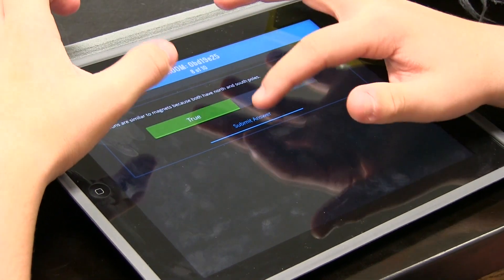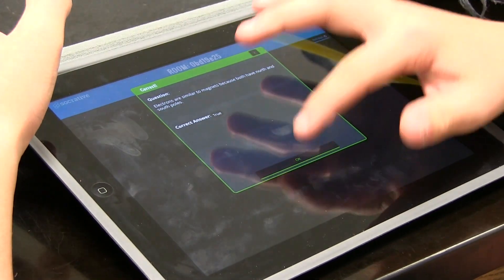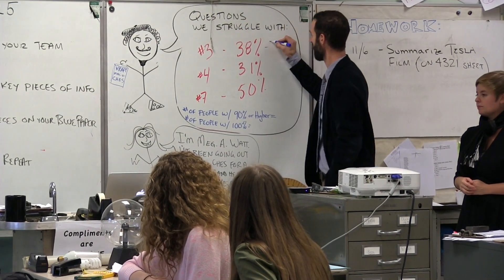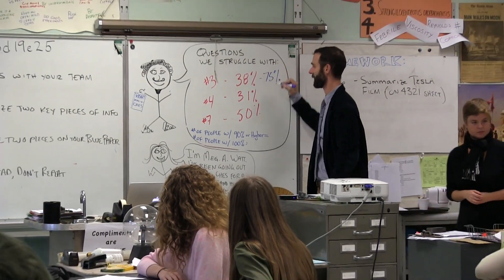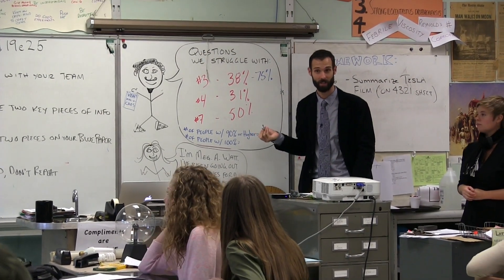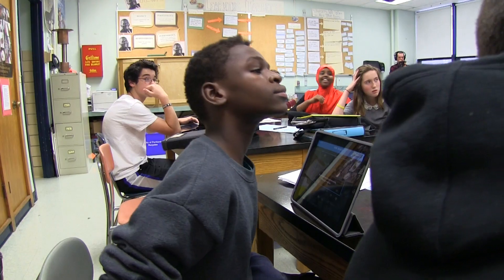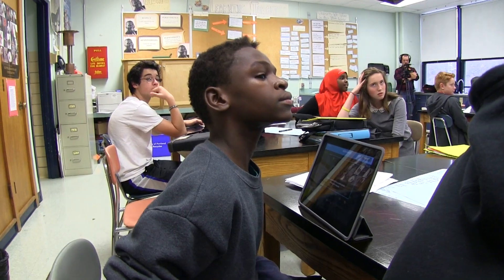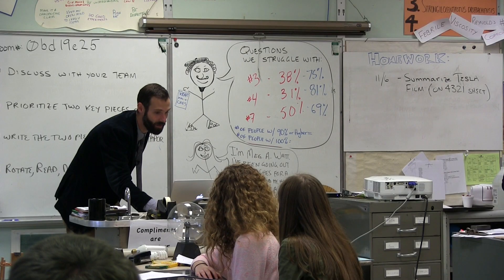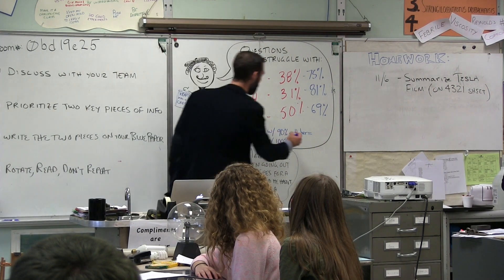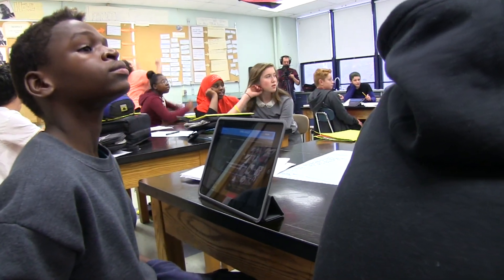Take a look up at the board — this is so cool. Question 3, we've gone from 38% to now 75% of the class got that question right. Literacy instruction is not a separate entity from science instruction. Those things are so woven together in what professional scientists do that they need to be woven together in what we do in a science classroom. And the number of people that got everything correct — wow — 7 people got it. Good job.